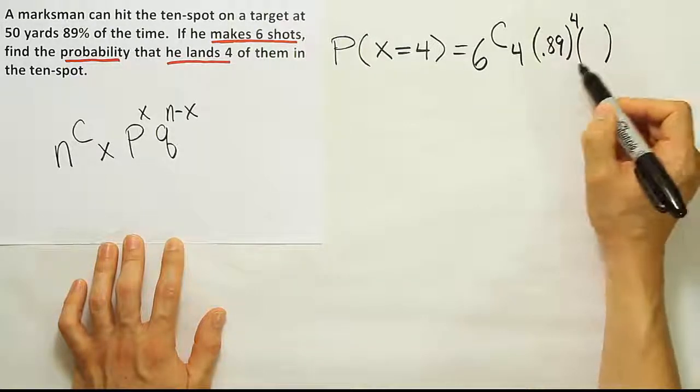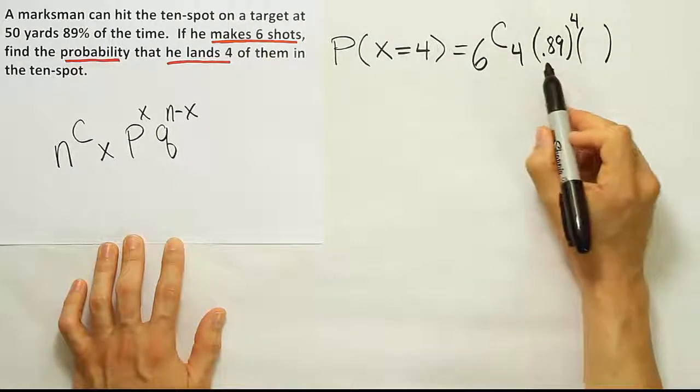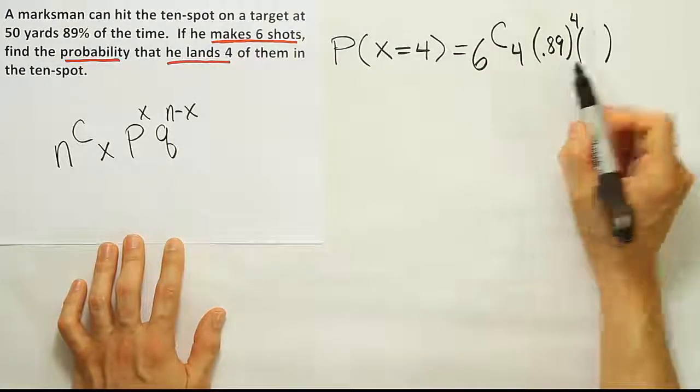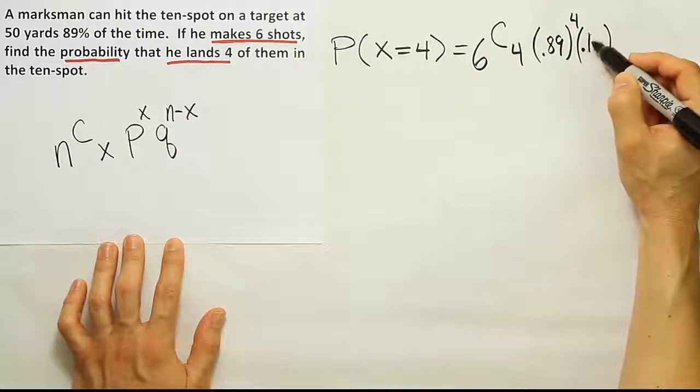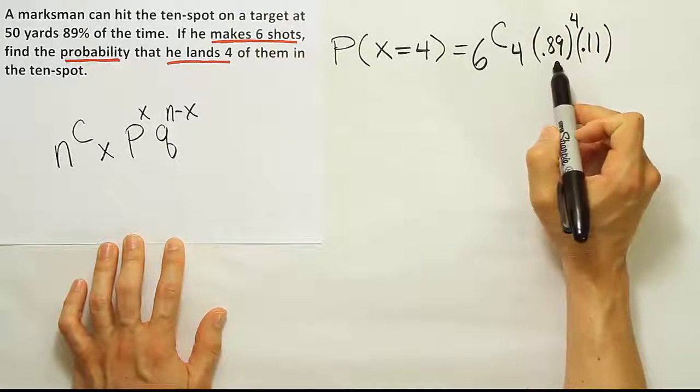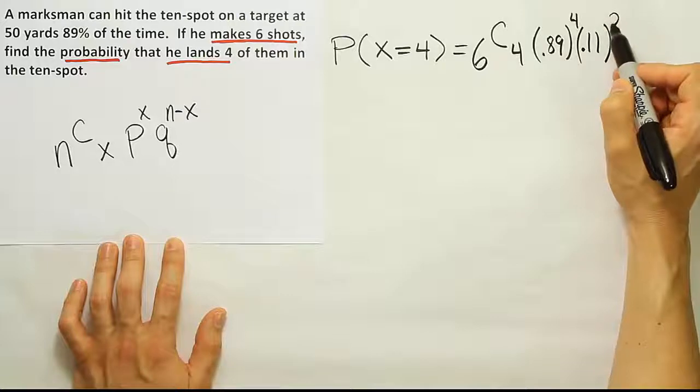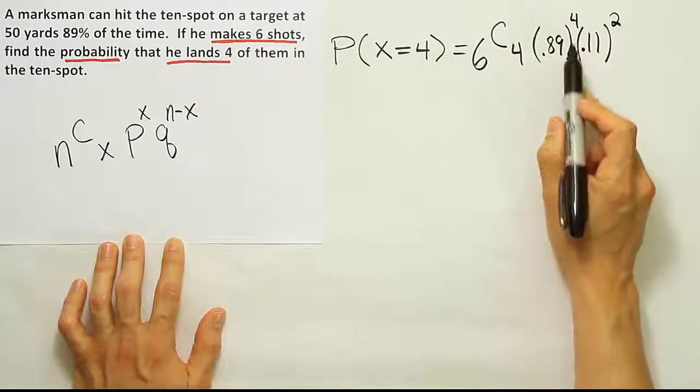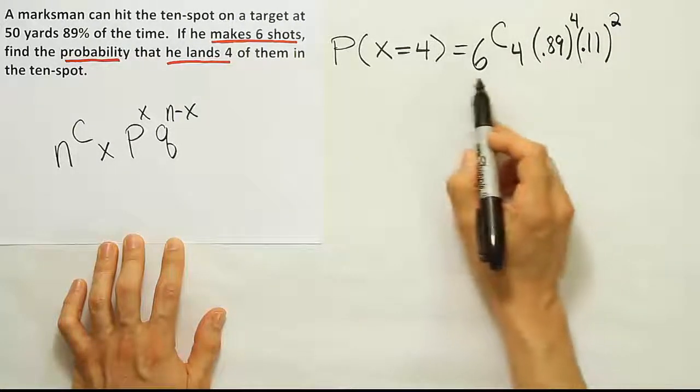The remaining leftover probability goes to the chance he misses. If he has an 89% chance of making the shot, he's got to have a 0.11 chance of missing. That's 11% chance of missing. If four of them went into the bullseye, the remaining two that are left over must have been misses, right? Four that make it, two that don't. That gives you a total of six shots.